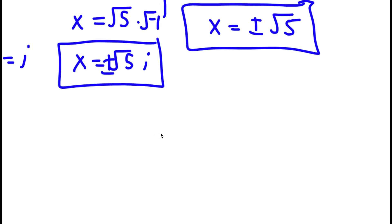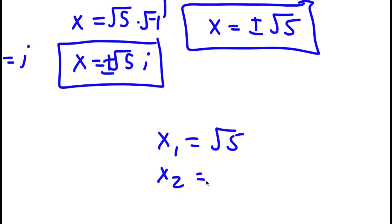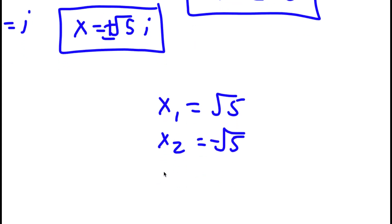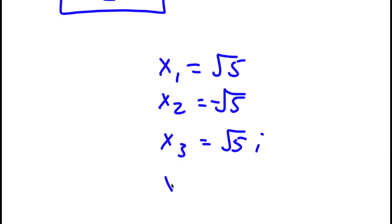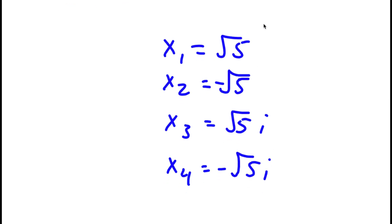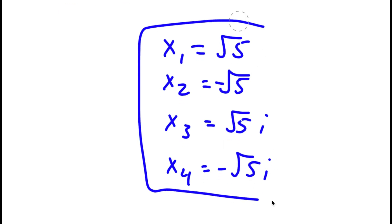My four solutions to this problem are the square root of 5, negative square root of 5, square root of 5 times i, and negative square root of 5 times i. So these are my four solutions.